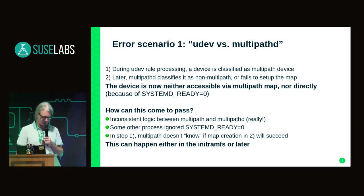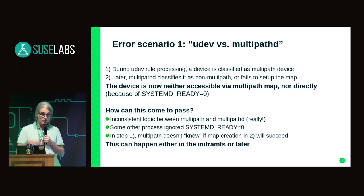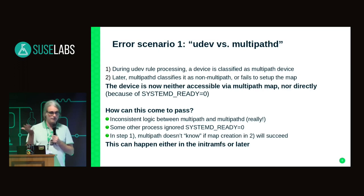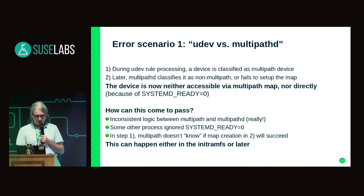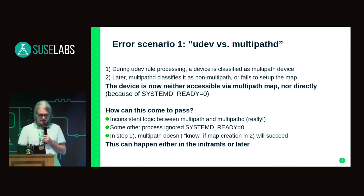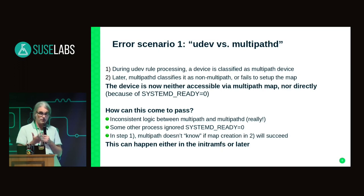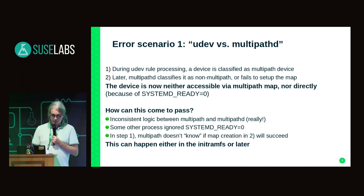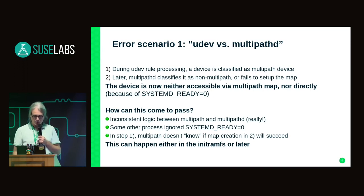How can this happen? It can be inconsistent logic between multipath -U and multipathd. It can be because some process ignores SYSTEMD_READY=0 and grabs the device nonetheless. Then the basic problem is when we are in step one, multipath cannot foresee whether step two is going to succeed or not. So it's a generic problem, and this scenario can occur either during initramfs processing or later in the root file system.